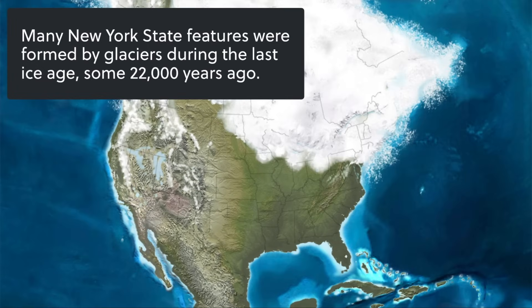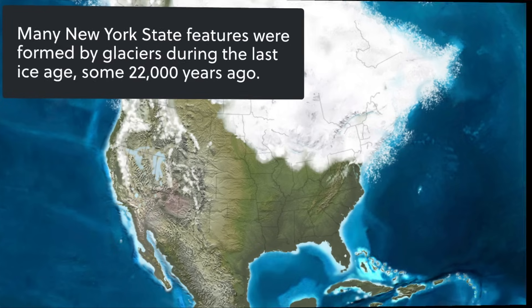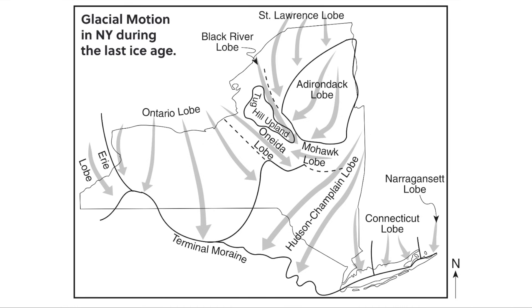If we look at New York State, many of the features we see were formed by glaciers during the last ice age, which was about 22,000 years ago. Here we see the movement of the various glaciers during that ice age, all generally moving from Canada down south.